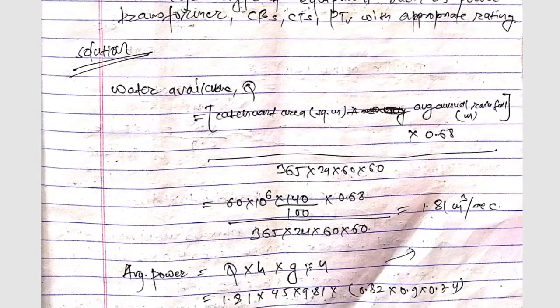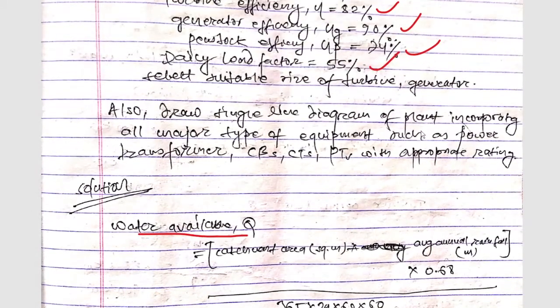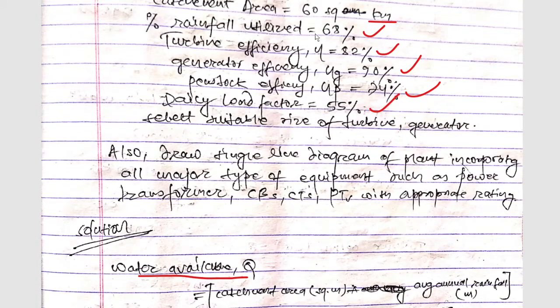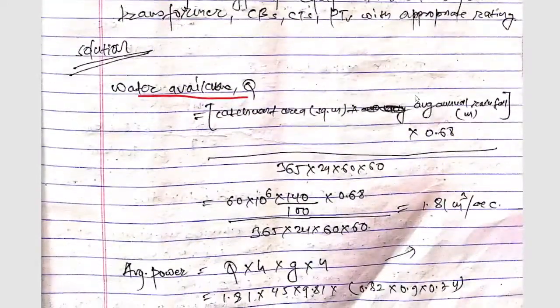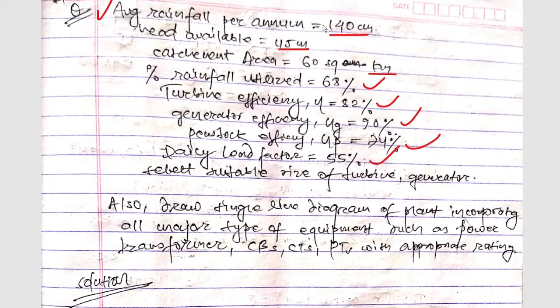So here the very first step we will do, we have to calculate the water evaluation means Q. So Q will be catchment area in square meters into average rainfall, and here the percentage of rainfall utilized is given as 68%, so into 0.68 upon 365 into 24 for a year and into 60 into 60 to convert again in seconds.